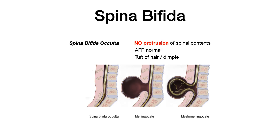Starting with spina bifida occulta: there is no protrusion of spinal contents. In spina bifida occulta, alpha-fetoprotein when measured will be normal. You would only see elevated levels of AFP if there is an open hole in the low back through the vertebrae, because that's where AFP leaks out and is measured. In these patients, you could see a tuft of hair or a sacral dimple right in that area of the low back. It's called occulta because it's occult — you don't see it, it's hidden with no protrusion. This is the most benign version of spina bifida.